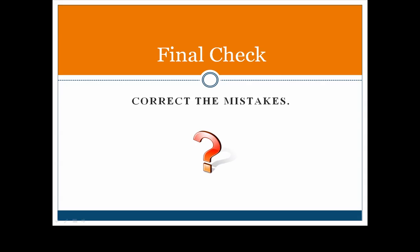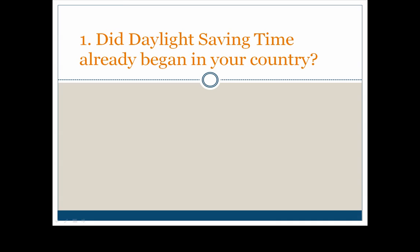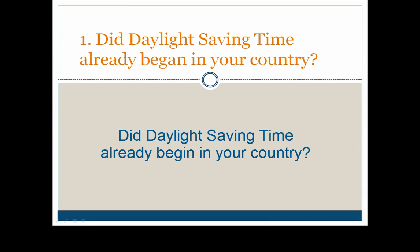Final check — correct the mistakes. Number 1: read the question and then correct the mistake. The mistake is with the verb form. We need the base form of the verb. The helping verb 'did' already marks the past tense. So the correct question is: 'Did daylight saving time already begin in your country?'